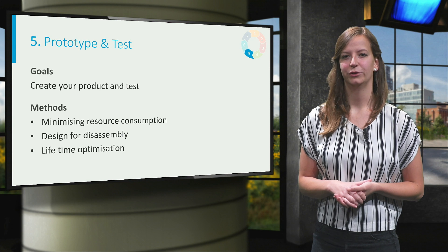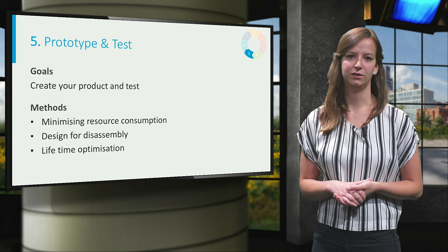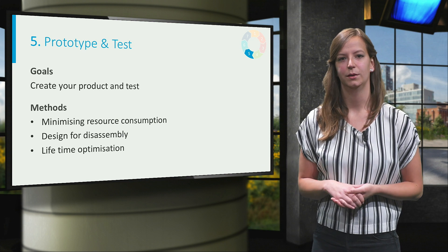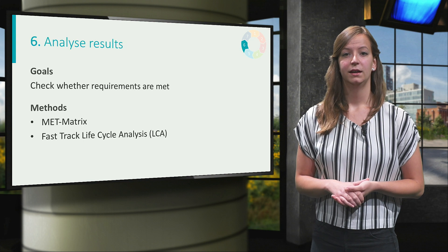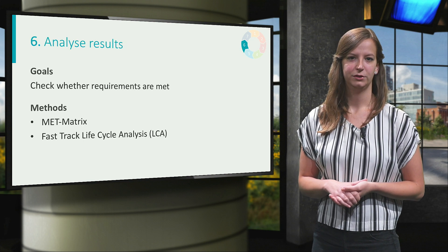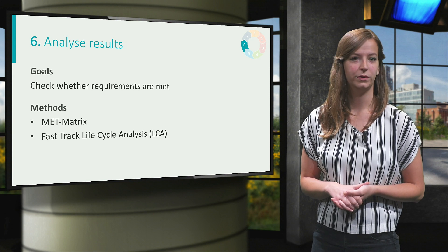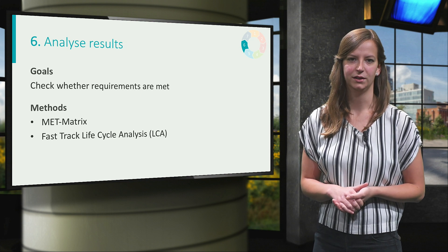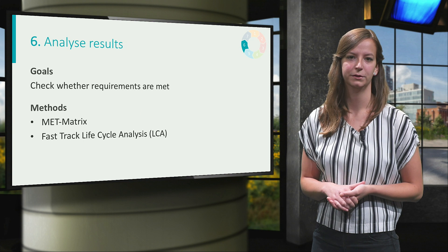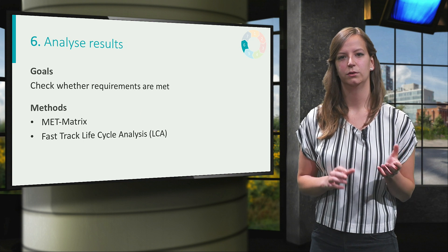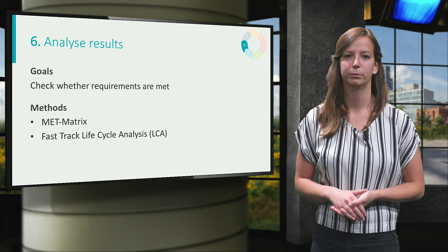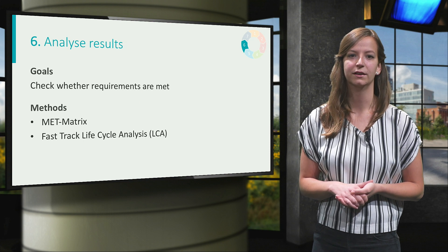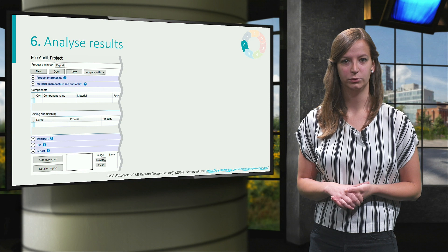Now that we have a design, the first prototype can be created. During this phase it could be tested whether the chosen design-for tool succeeded. However, a more precise analysis happens in the next phase. In the analyze results phase you will dive deeper into the absolute assessment, and you will check whether the requirements are fulfilled with the help of assessment tools. In contrast to the concept phase, you now need to make a more elaborate and precise estimate of the impact of your product. In this phase the MET matrix can still be used, only this time it should be executed for the full design and more precisely. A more profound and well-known method for assessment is called the fast-track lifecycle analysis, which can be done with the help of the eco-audit tool of CES.